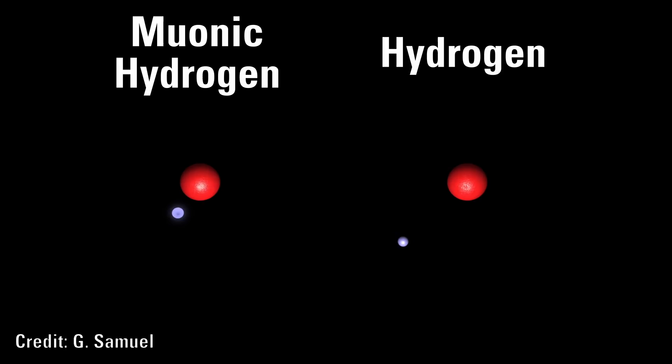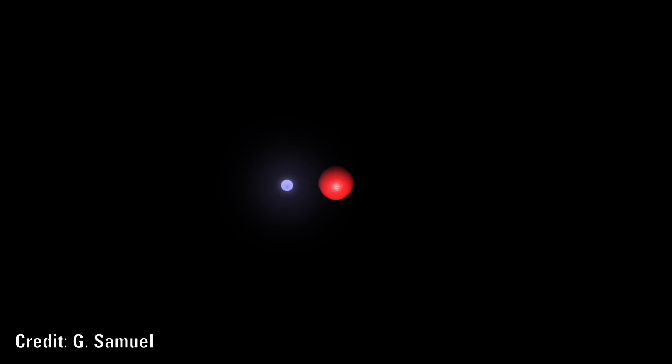Muonic hydrogen has the muon orbiting much closer to the hydrogen than a normal atom. There is also a process called muon capture. Here a proton and a negative muon join resulting in the production of a neutron and a neutrino and sometimes a gamma ray.